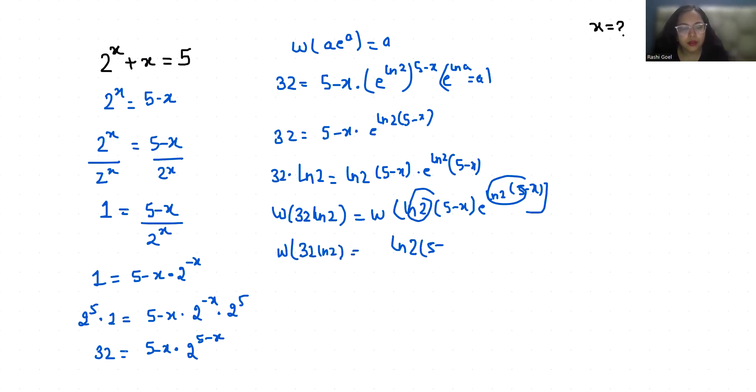Now, I am going to divide both sides by ln 2. This will cancel out, giving us W(32 ln 2) divided by ln 2 equals 5 minus x.